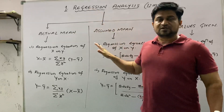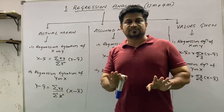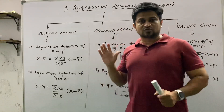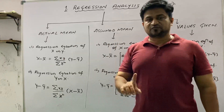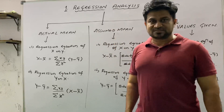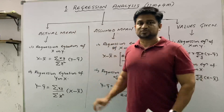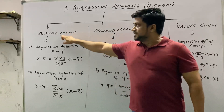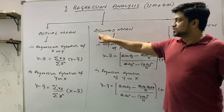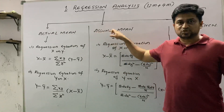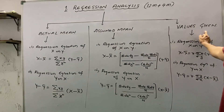For revision, what you have to remember are the important points. The unit name is regression analysis and it has three types of questions. First is questions based on actual mean. Second is questions based on assumed mean. And the third one is when values are directly given to us.